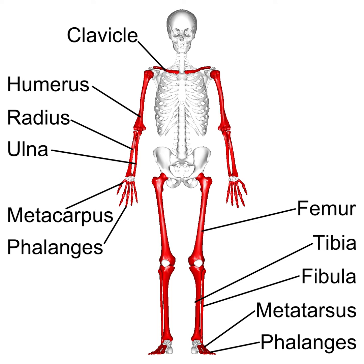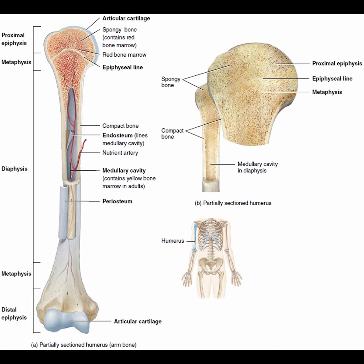Long bones, especially the femur and tibia, are subjected to most of the load during daily activities and they are crucial for skeletal mobility. They grow primarily by elongation of the diaphysis with an epiphysis at each end of the growing bone. The ends of the epiphysis are covered with hyaline cartilage, articular cartilage.